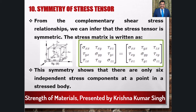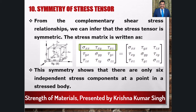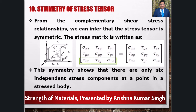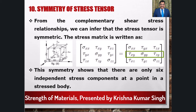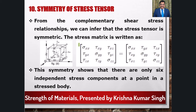We can see that the stress components matrix is symmetric. The matrix is: [sigma_xx, tau_xy, tau_xz; tau_xy, sigma_yy, tau_yz; tau_xz, tau_yz, sigma_zz]. Due to the complementary shear stress relationships tau(xy) = tau(yx), tau(xz) = tau(zx), tau(yz) = tau(zy), we therefore observe that the stressed body has only six independent stress components.